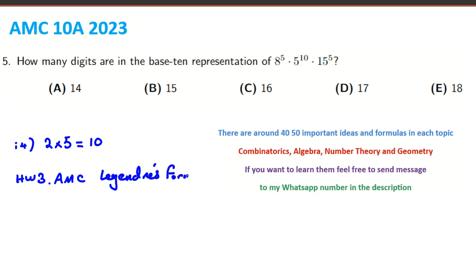Legendre's formula is that when we have p is prime and you want to find power of p in m factorial, it will be n over p plus n over p squared and so on. If you want to know the reason or want to learn other ideas, you can send message to my WhatsApp number.